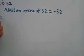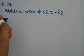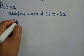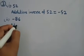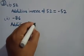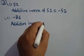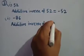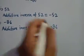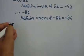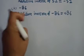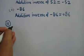Now the second part: minus 86. The additive inverse of minus 86 is equal to 86. You will solve the remaining parts in the same way.